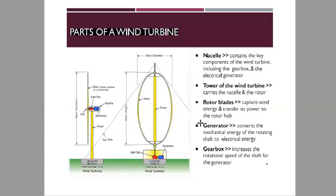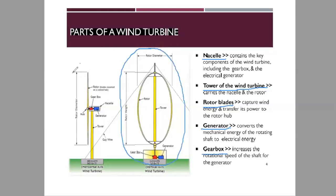Now let's talk about the parts of a wind turbine. Key parts include the nacelle, the tower, the rotor blades, the generator, and the gearbox. Looking at both the vertical axis and horizontal axis wind turbine, both types share similar characteristics and components.